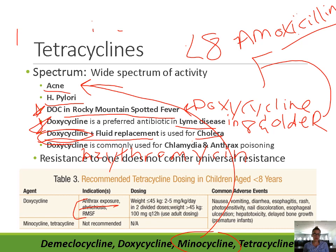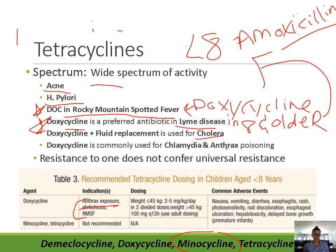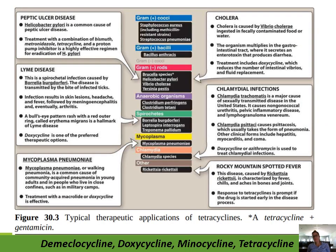An important note about resistance: if a bacterium has resistance to one tetracycline, it does not necessarily mean it has resistance to another. So resistance to one does not confer universal resistance, which makes it harder for bacteria to be resistant to the tetracycline antibiotics. Tetracyclines have a pretty wide spectrum of activity with coverage all over the place.